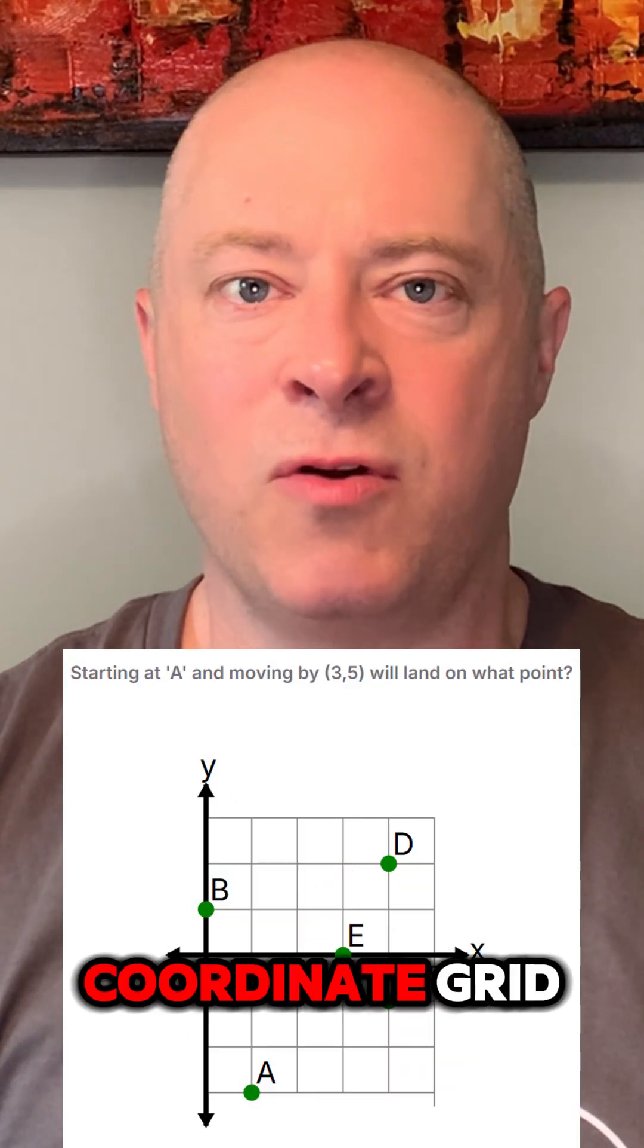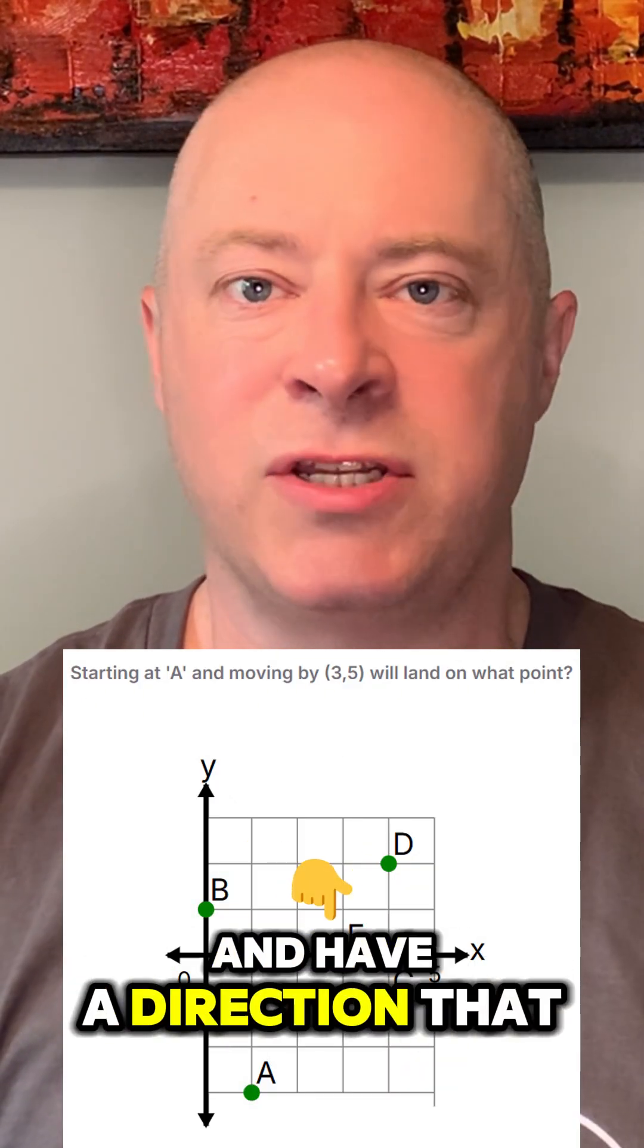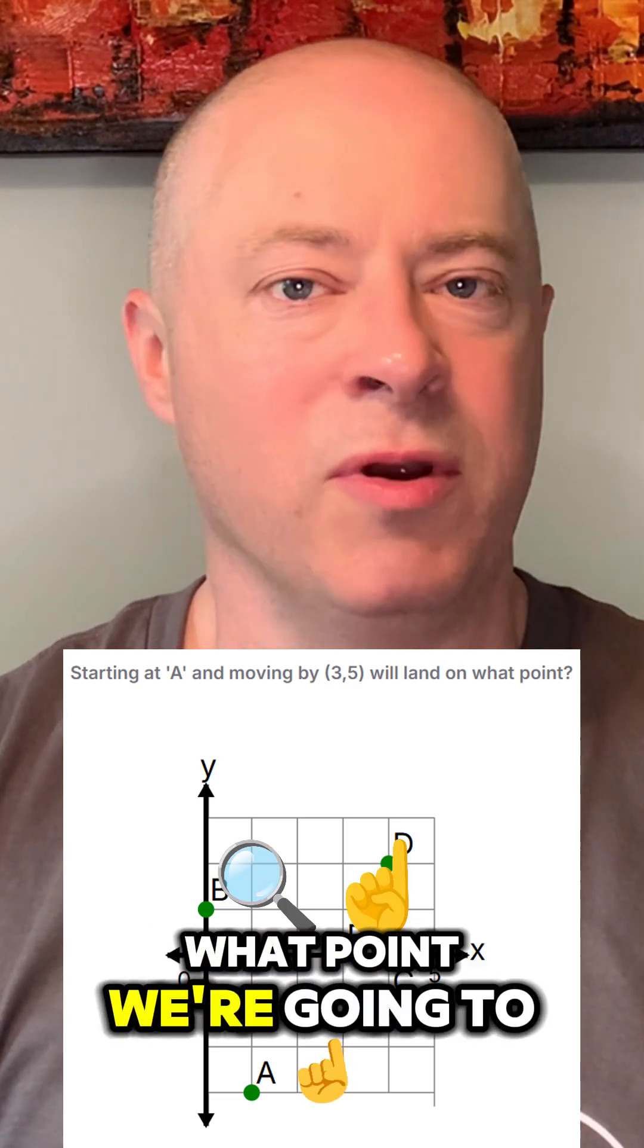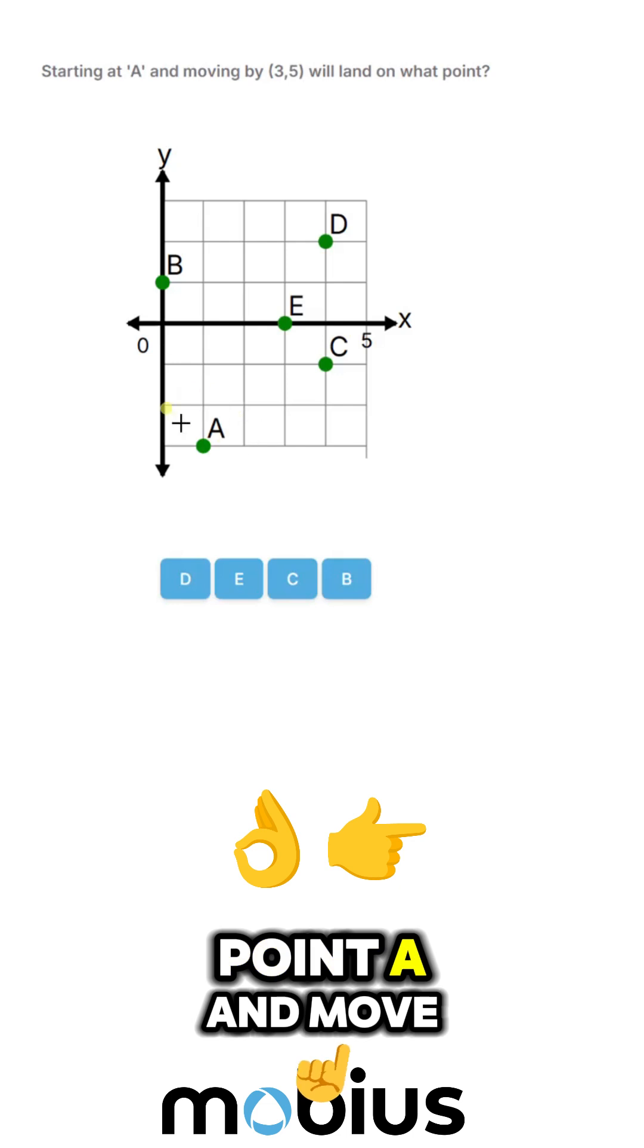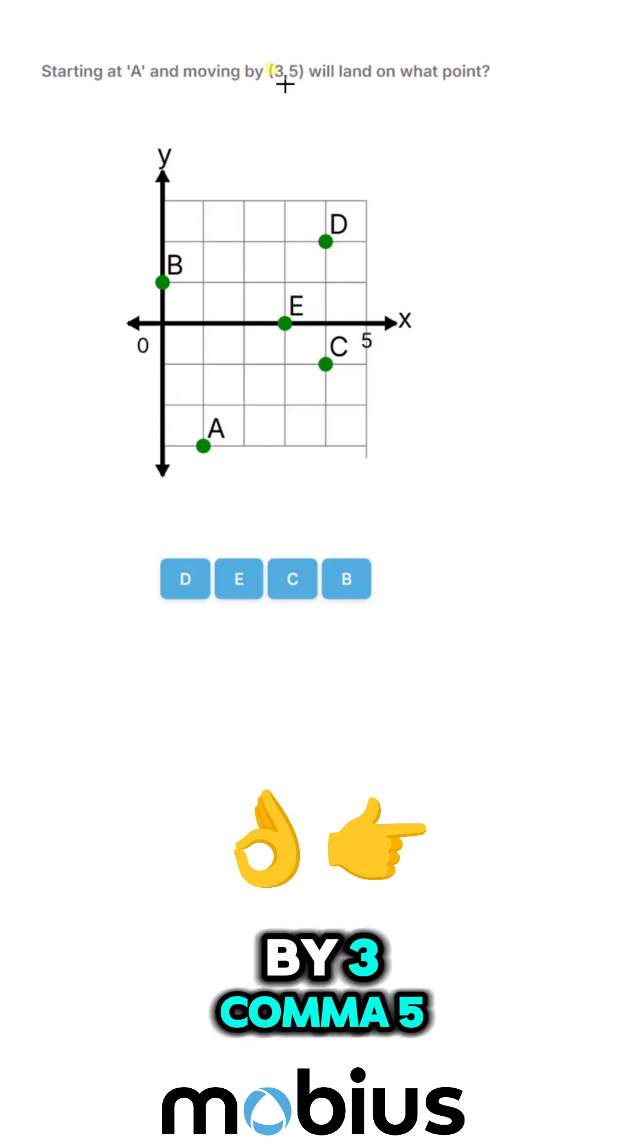If we start at one point on the coordinate grid and have a direction that we move, can we figure out what point we're going to land on? Okay, let's start at point A and move by 3, 5.